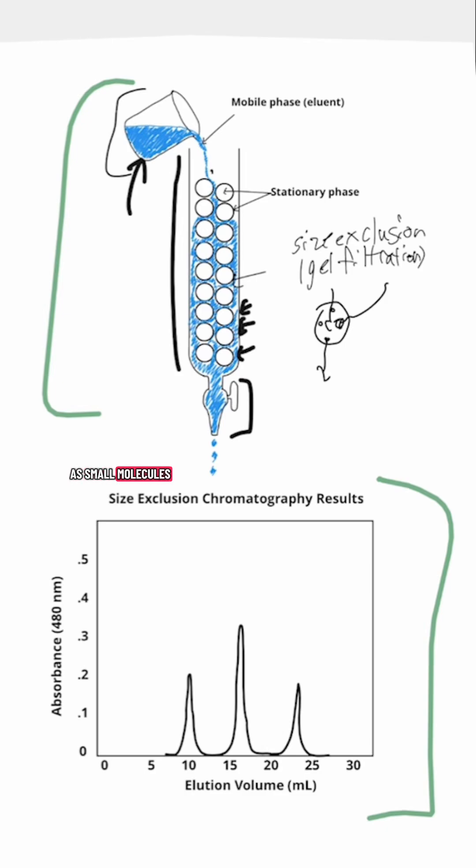That means that as small molecules go down this column, they'll get stuck in a bead, they'll eventually make their way out, but then they might get stuck in another bead, and that continues as they go down this column.